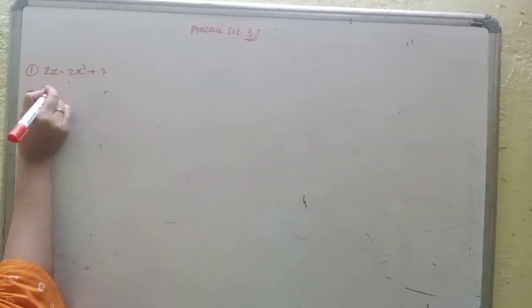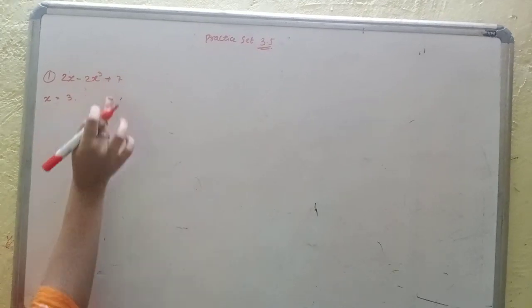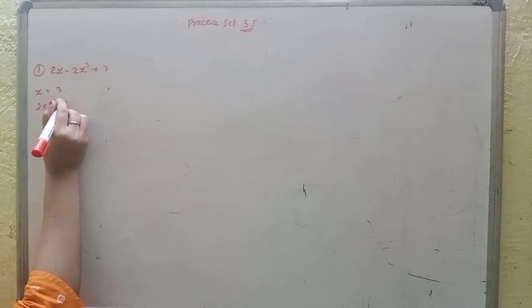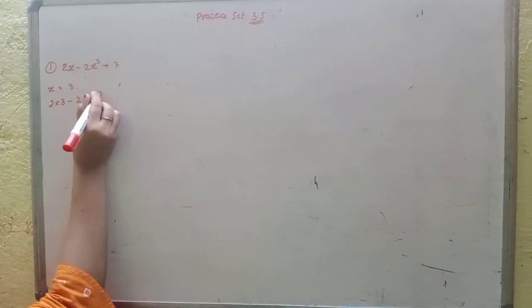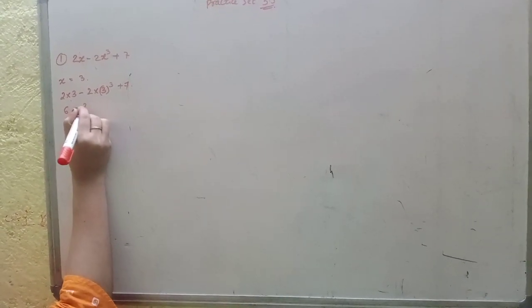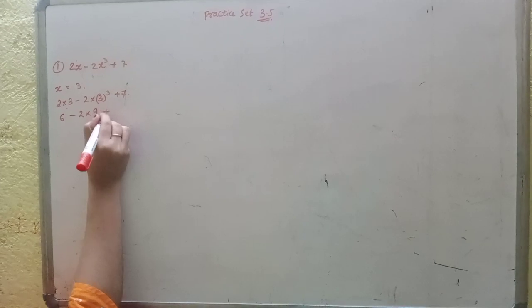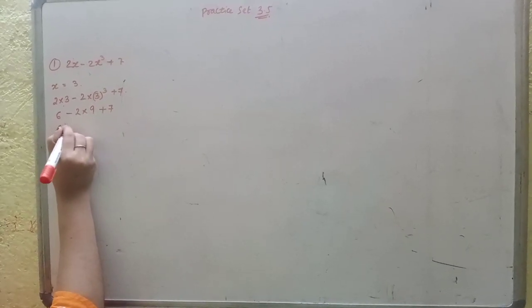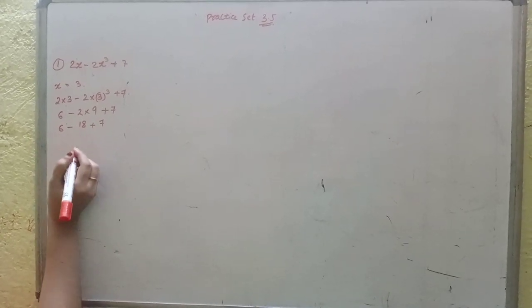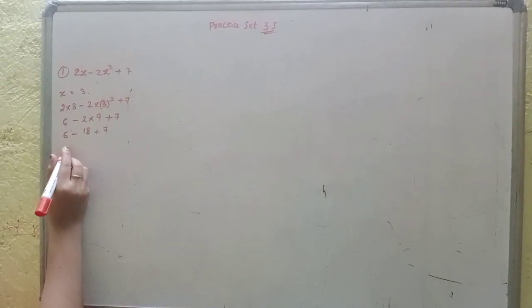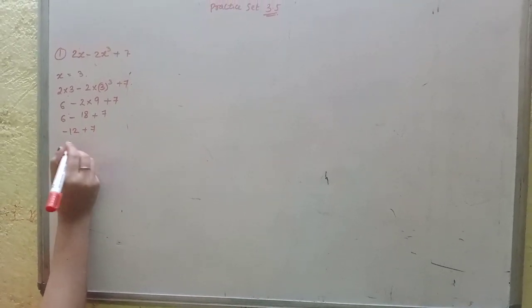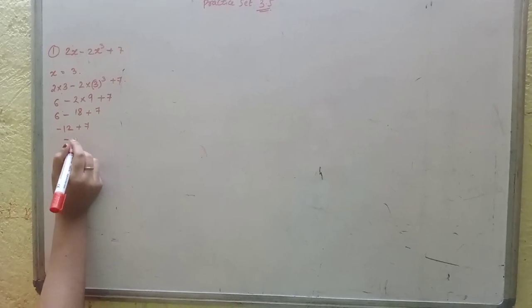First, x ki value di hai 3. We have to put 3 in place of x. So 2 into 3 minus 2 into 3³ plus 7 equals 6 minus 2 into 27 plus 7 equals 6 minus 18 plus 7. Now 6 minus 18 is -12, plus 7 equals -5.